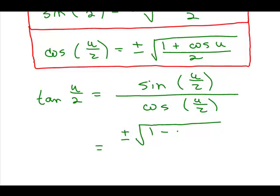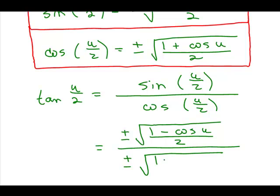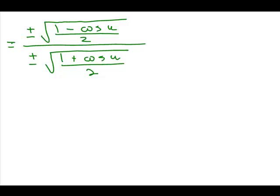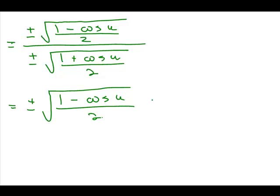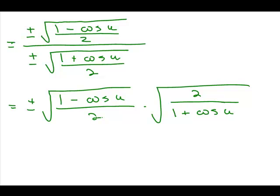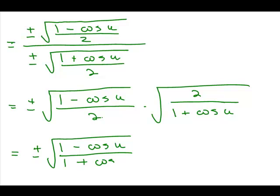For the sine we have the square root of 1 minus cosine of U all over 2, and for the cosine we have plus or minus the square root of 1 plus cosine of U over 2. You do a little algebra to simplify: dividing one square root by another gives you the square root of the numerator times the reciprocal of the denominator. The 2s cancel out, so our final answer is plus or minus the square root of 1 minus cosine U over 1 plus cosine U. Those are our three formulas: sine of U over 2, cosine of U over 2, and tangent of U over 2.